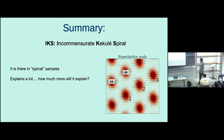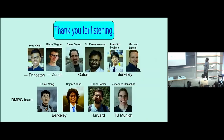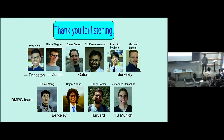So the summary: IKS order — incommensurate Kekulé spiral order — seems to be present in typical samples with a very small amount of strain. It seems to explain a lot of experimental features, and the question is how much more will it explain — for instance, whether the IKS order provides a good parent state for superconductivity. Apparently also a couple of weeks ago the group of Stefan Nadj-Perge reported that there seems to be IKS in the trilayer system as well. Thank you very much. This work was done in collaboration with all these people, in particular Ivan and Glenn who are both here, together with Steve and Sid at Oxford, and in collaboration with Mike's group at Berkeley. The DMRG was done by Tianlei, Sajant, Dan, and Johannes.